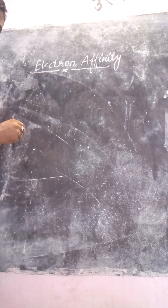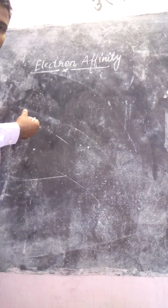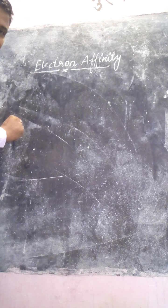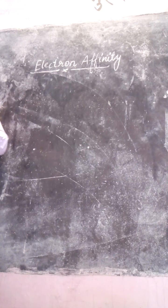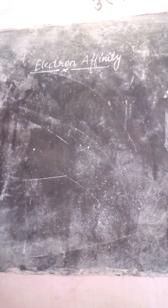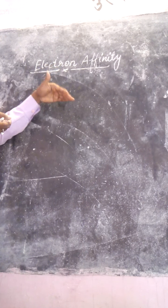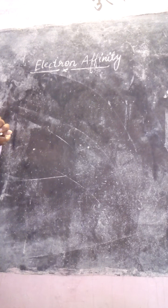Hello, good morning students. Today in the chapter Periodic Properties, we will discuss the next property: electron affinity. The term electron affinity means electron gain. In the previous topic about ionization enthalpy, I explained that energy is required to remove an electron from the outermost shell of an isolated gaseous atom. Electron affinity is just the opposite — it is the amount of energy released when an extra electron is added to an isolated gaseous atom.